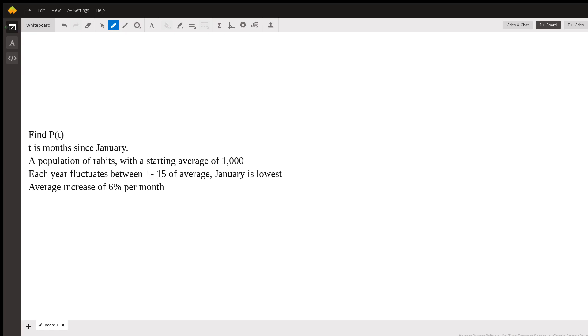So, we're going to start setting up our equation. We know we're going to have P of T, which is our population of rabbits. And we know that at the start, there's an average of 1,000 rabbits, which I'll write here for now. We know that this fluctuation is going to come into effect at some point. But since we know that this average is increasing and the fluctuation is related to the average, we'll first try to figure out that average population. And so, we know the average starts at 1,000 and it